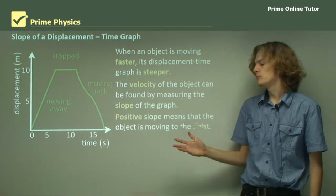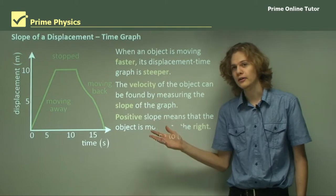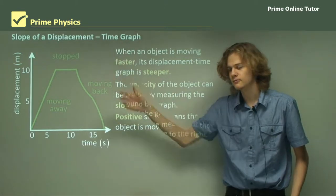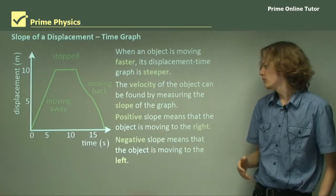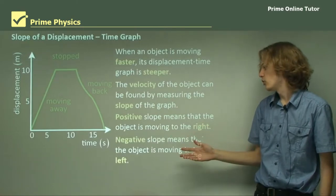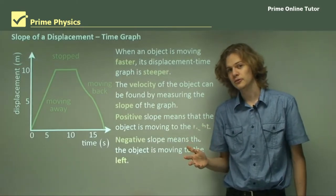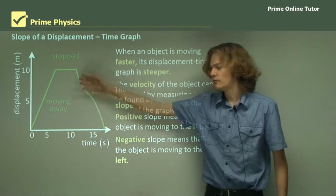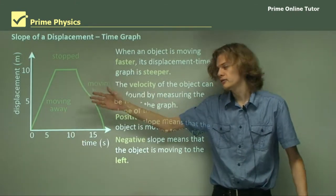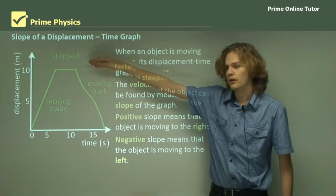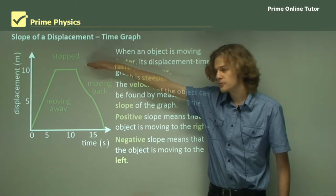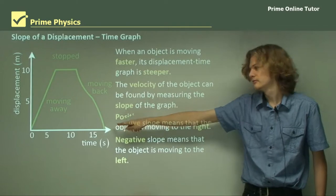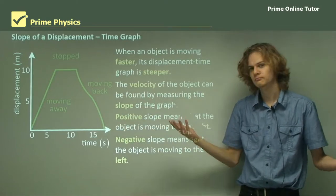A positive slope means that the object is moving to the right, or up, or north, or whatever the positive displacement represents. And a negative slope would mean the object is moving to the left. So in this graph, we have an object that's moving away to the right. It reaches a displacement of 10 meters and then stops. And then it moves back to the left, or to the south, or down.